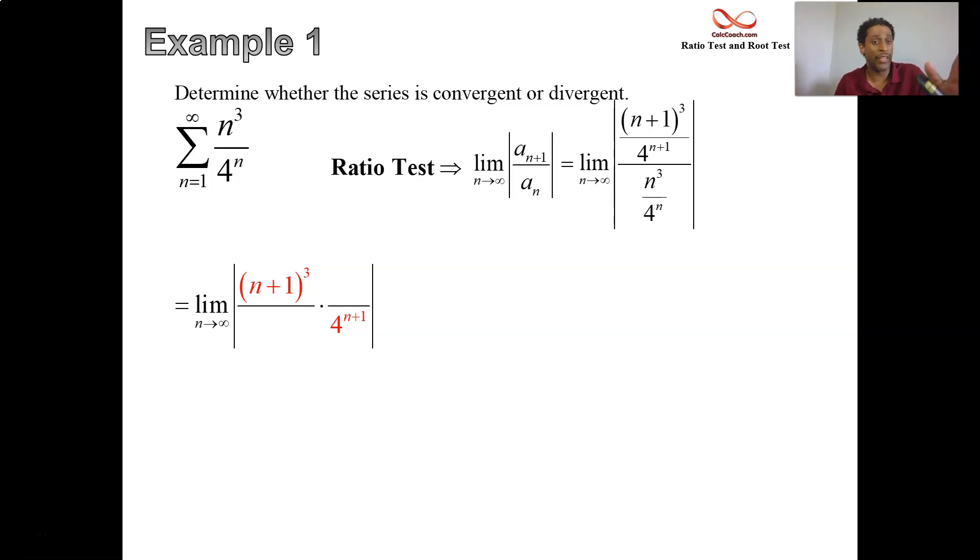I replace n cubed with n plus 1 cubed. I replace 4 to the n with 4 to the n plus 1. But in a separate fraction, one in the numerator, one in the denominator. In the dividing of the one fraction by the other, what happens with the original a sub n is it gets reciprocated and multiplied. So the original n cubed would be in the denominator, and the original 4 to the n would be in the numerator. We separate it like this so we can focus our attention separately on these two fractions and be able to quickly answer the question of what's the conclusion of the ratio test.